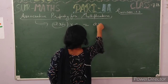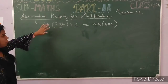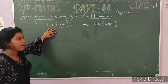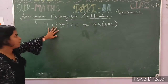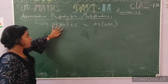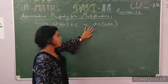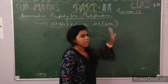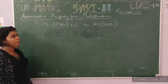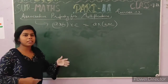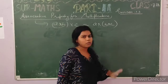Students, look carefully. I will write the rule here. If anyone asks you what is the associative property for multiplication, you can say: (a × b) × c = a × (b × c). This is the associative property of multiplication.